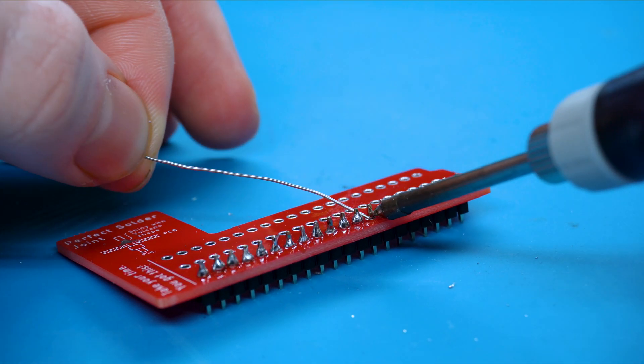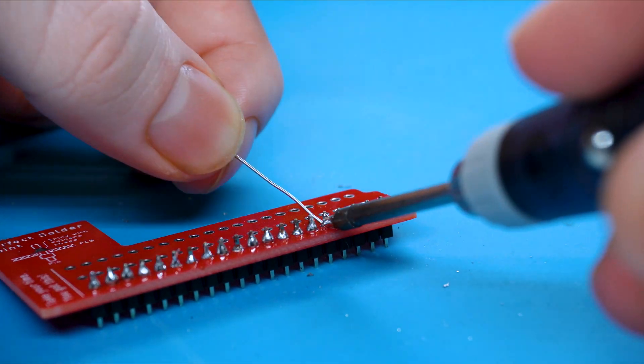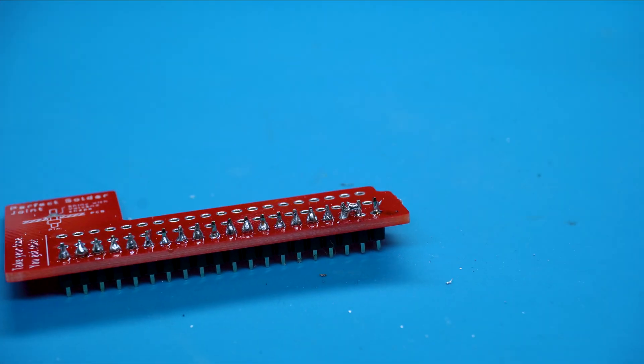The aim is to create three consistent solder joints, and then you can be able to move on and solder the Microcade kit.